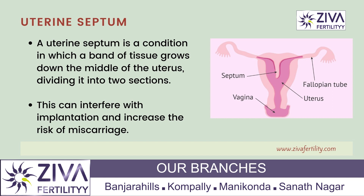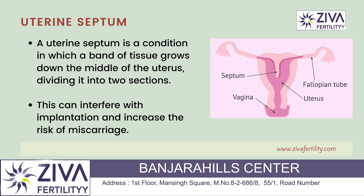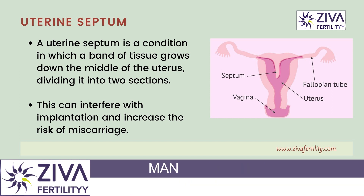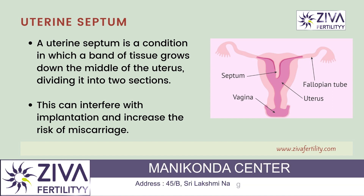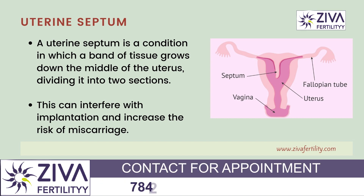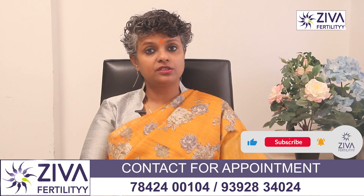Uterine septum is a condition in which a band of tissue grows down the middle of the uterus, dividing it into two sections. This can interfere with implantation and increase the risk of miscarriage.